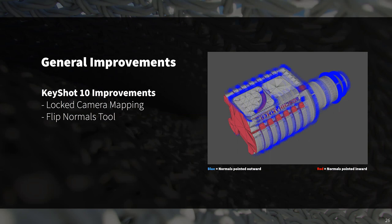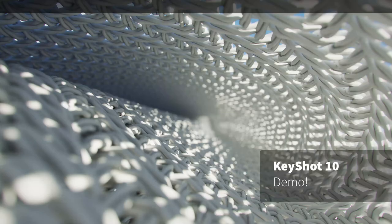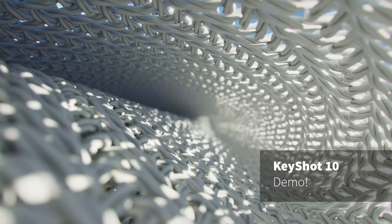The second general improvement is the newly added flip normals tool, which allows you to automatically or manually reverse the direction of the normals on an object by selecting its faces. You can find the flip normals tool located under Tools on the ribbon above the real-time view. I'll show you how to use that feature in just a moment.